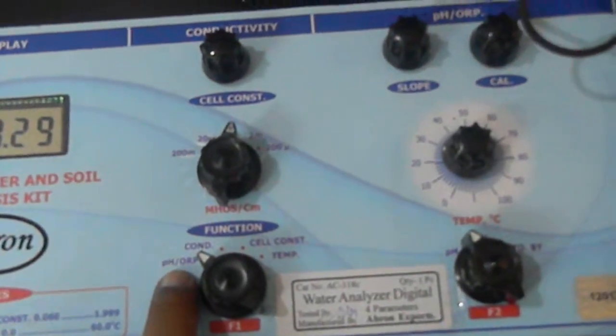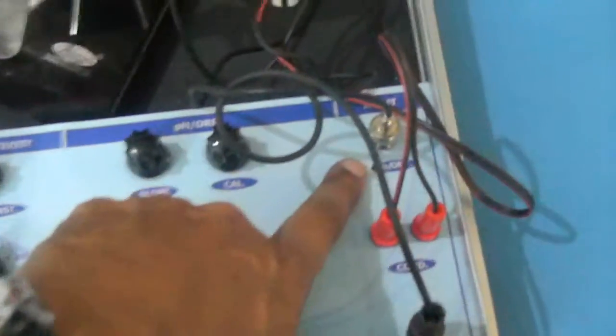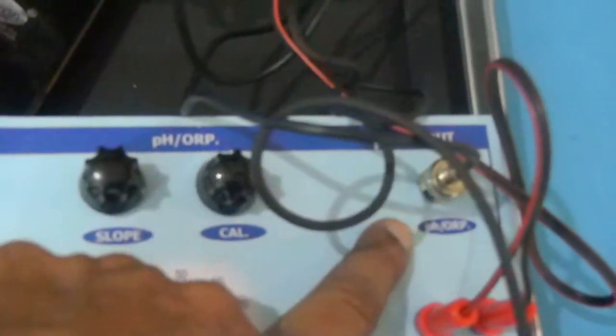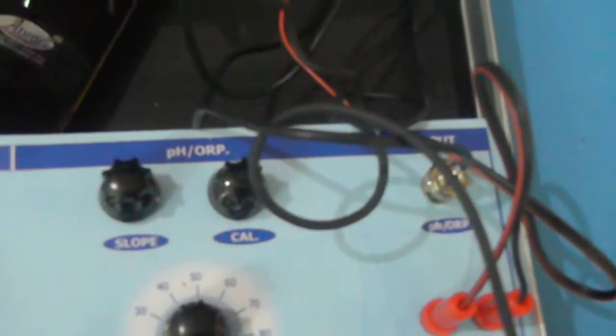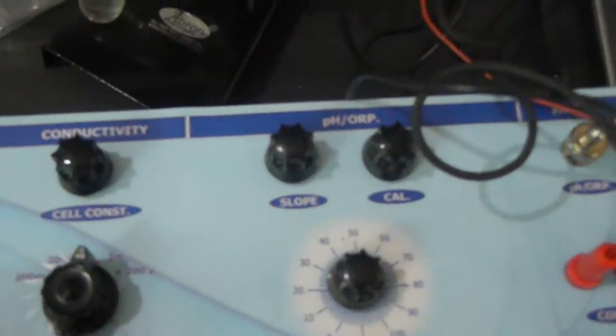You will see some display. Put it on pH mode and connect the pH electrode. You can connect the pH electrode to the pH, and there are points for connecting this electrode. Then this temperature which is visible can be selected to see the temperature.